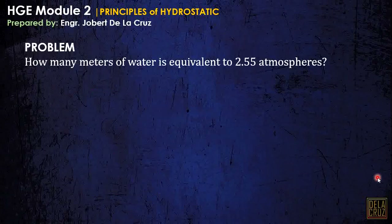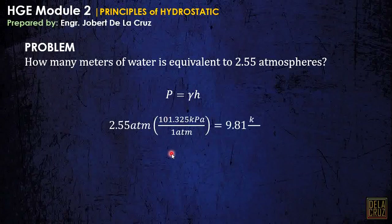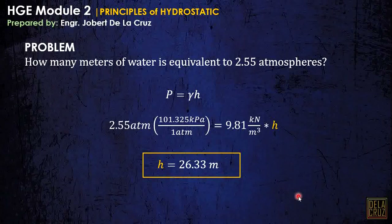How many meters of water is equivalent to 2.55 atmospheres? From pressure equals gamma times height, and converting atmosphere to kilopascal: 2.55 atmospheres times 101.325 kPa per atmosphere equals gamma times height, where gamma of water is 9.81 kN/m³. Solving, H equals 26.33 meters. This type of problem appears in board exams, so knowing the principle is essential.